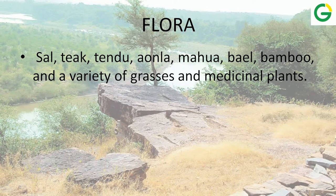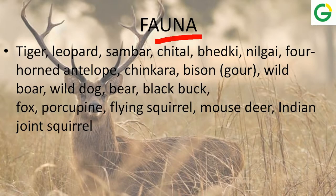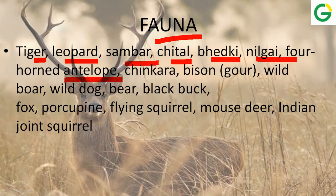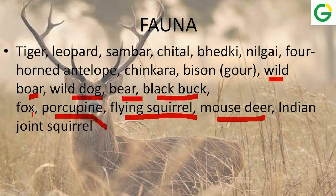The flora of the Narmada basin includes Sal, Teak, Tendu, Aula, Mahua, Bael, bamboo, and many other grasses and medicinal plants. The fauna includes tiger, leopard, Sambhar, Chital, Vedki, Nilgai, four-horned antelope, Chinkara, bison (Indian Gaur), wild boar, wild dogs, bear, black buck, fox, porcupine (also known as Sahil in Hindi), flying squirrel, mouse deer, and Indian giant squirrel.